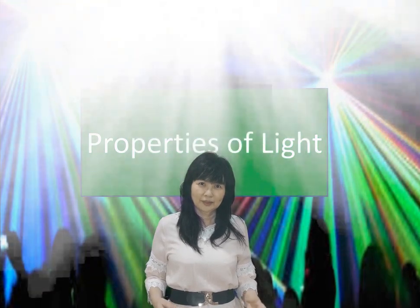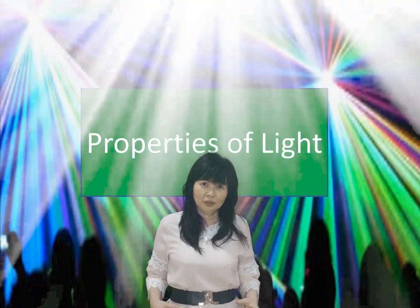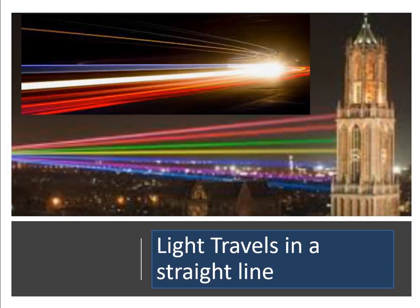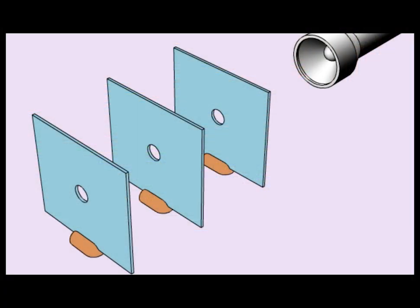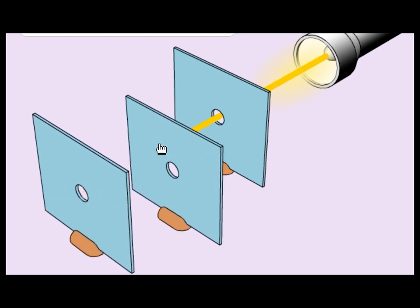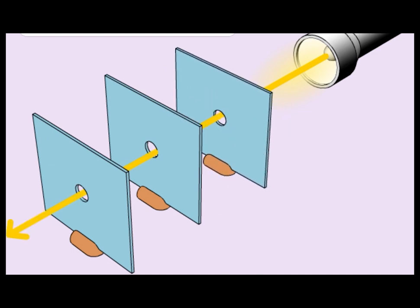We can see objects because light from the objects enters our eyes. The properties of light can be summarized as follows. One of the properties of light is that light travels in a straight line. Look at this diagram — the light can pass through. What happens when there are obstacles? As you can see from the activity, light travels in a straight line.